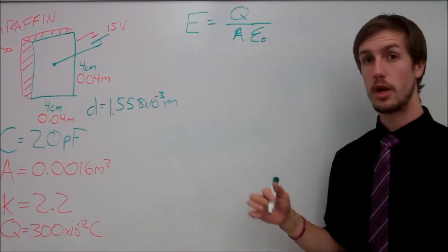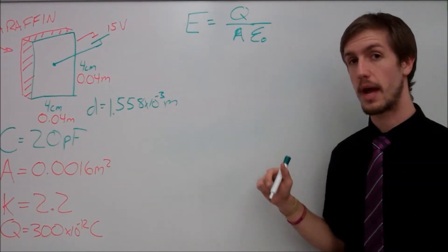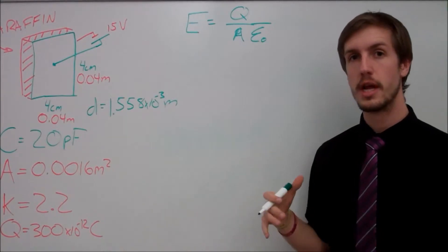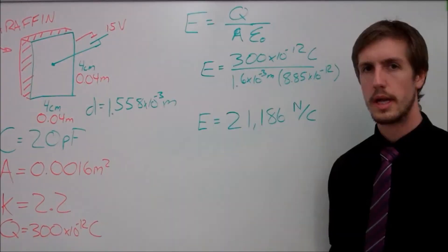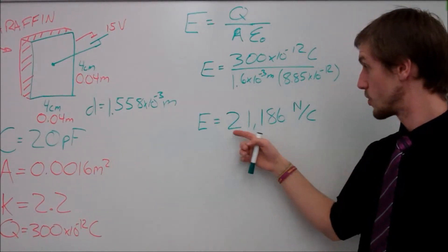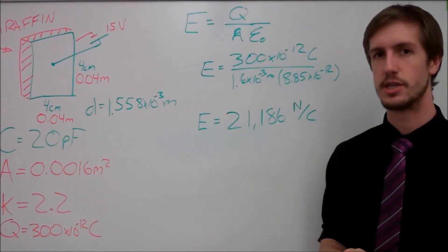It's going to look like this, where we know that epsilon not is a constant, we also have our area, we have our charge, and we're going to get our answer by doing this. Now our electric field we ended up getting was 21,186 newtons per coulomb.